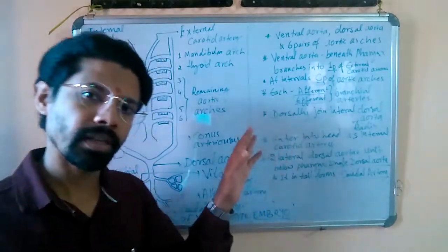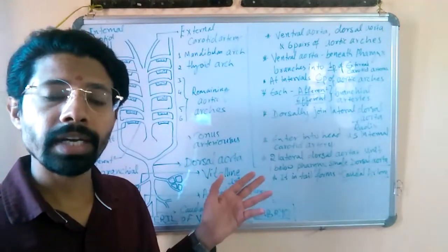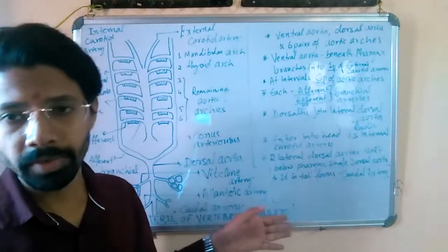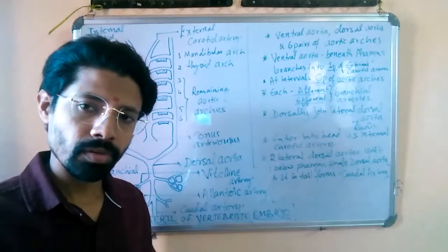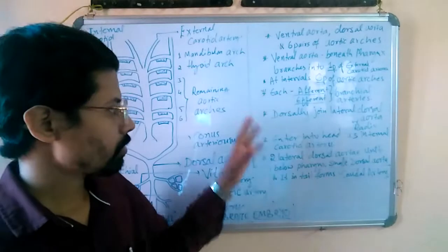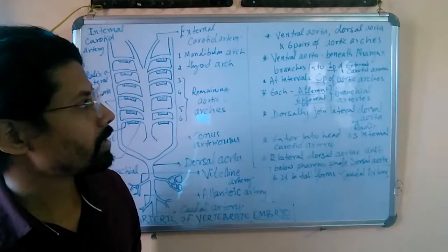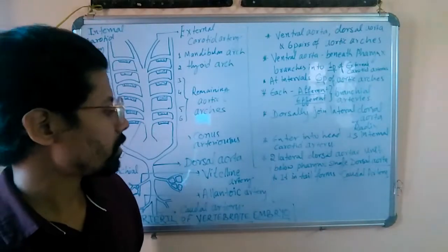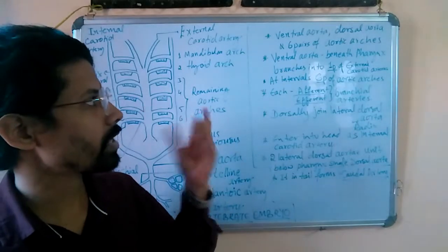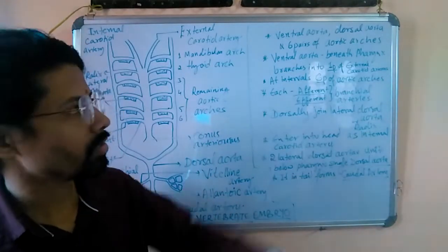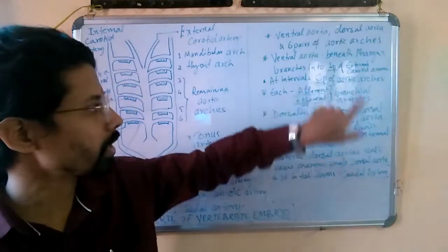In the next session we will continue with the comparative aortic arches of different vertebrates, from fishes to mammals. In this introduction part, the arterial system or the aortic arches can be divided into three parts: ventral aorta, dorsal aorta, and six pairs of aortic arches.